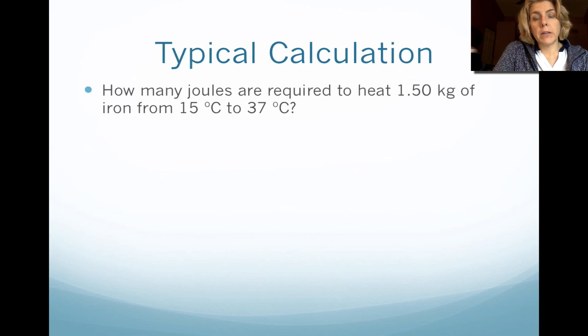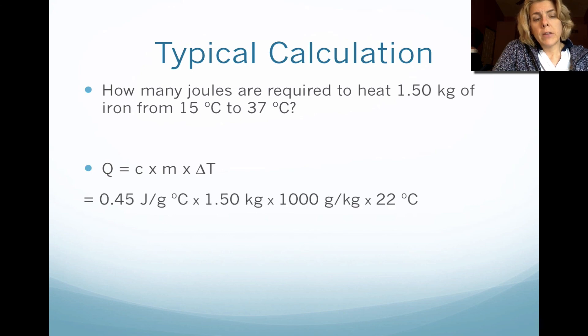Here's a typical calculation. They want to know how many joules are required to heat 1.5 kilograms of iron from 15 to 37 degrees C. So this is the formula that you need to know, and we're going to apply it. Notice that you have the specific heat, which is given to you, times kilograms, but we have to convert it to grams, so we multiply it by 1,000.